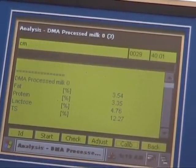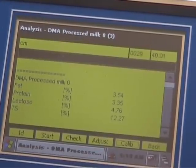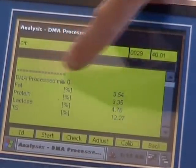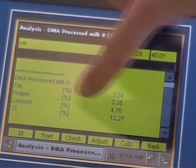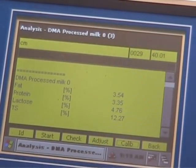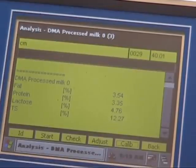When the reading is complete, the results are displayed on the screen. In this case, we have a result for fat, 3.5% protein, lactose and total solids. It's as simple as that.